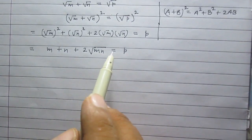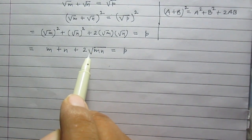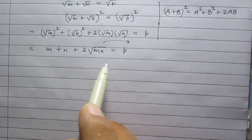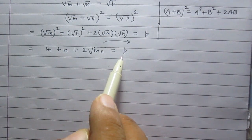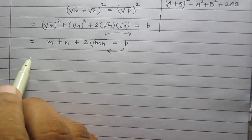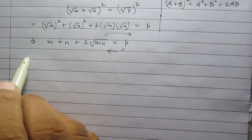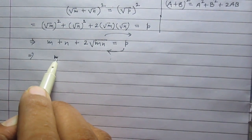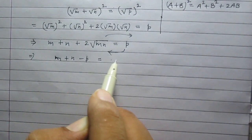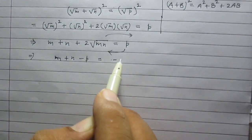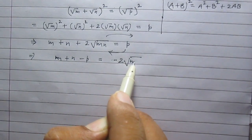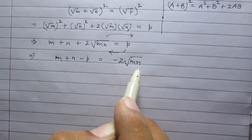Now we can transpose twice of square root of mn to the right hand side and transpose p to the left hand side. Doing so we will get m plus n minus p is equal to minus twice of square root of the product of m and n.